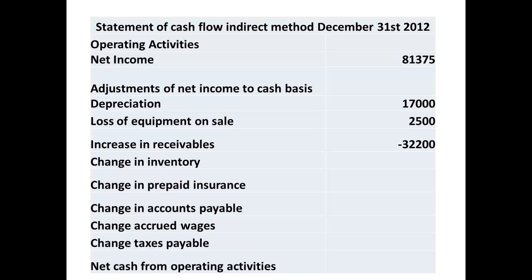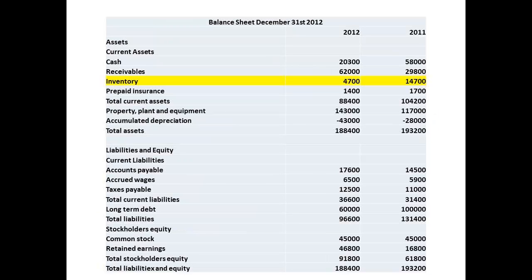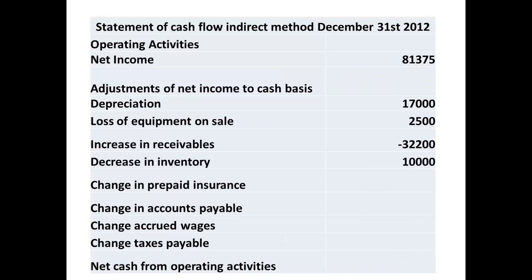We will now look at inventory. Again we obtain figures from the balance sheets. Inventory has decreased from $14,700 to $4,700. This represents goods that have been sold from inventory. We need to add back a decrease in inventory. If inventory had increased, we should have needed to subtract it.